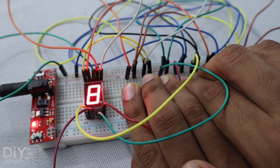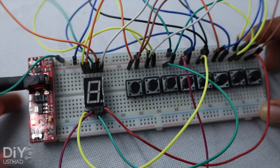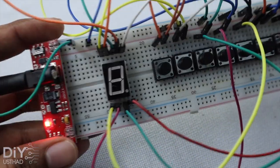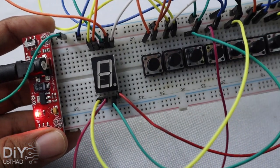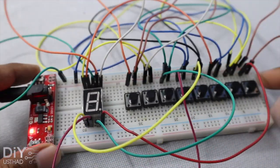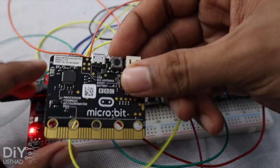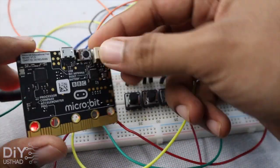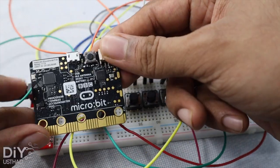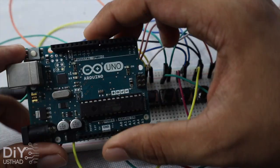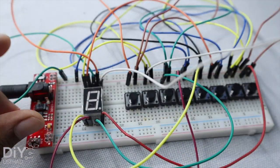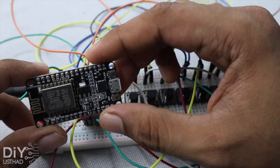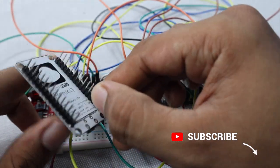So this is how the seven segment display works. In the upcoming videos, we will learn how to interface it with popular development boards like micro:bit, Arduino, STM32, ESP32, or ESP8266.